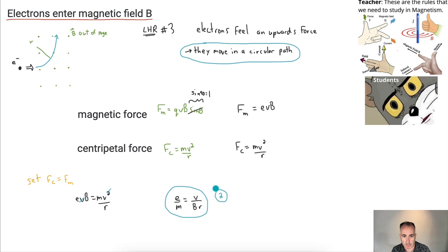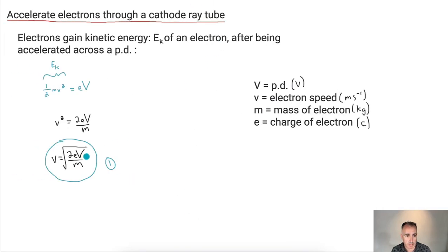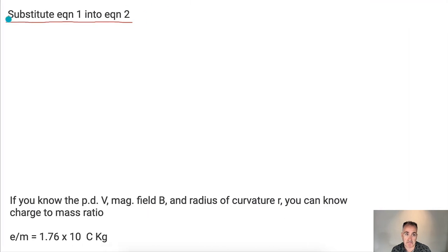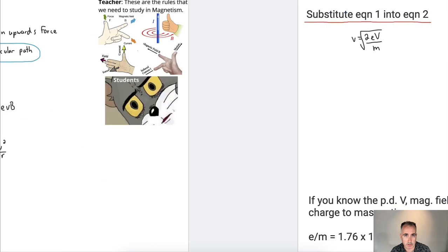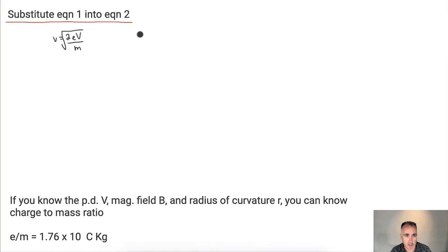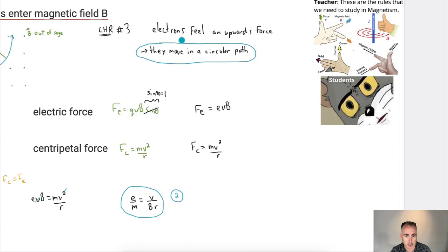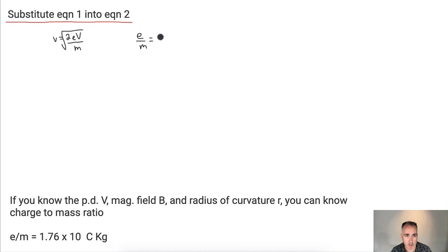Now we're going to substitute equation one into equation two. Equation one gave us v equals the square root of 2eV over m, with capital V as the potential difference. Equation two gives us e over m equals v over br. Let's put equation one into equation two.